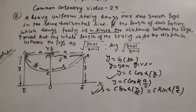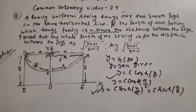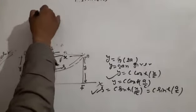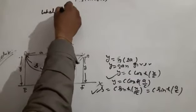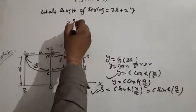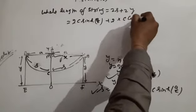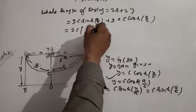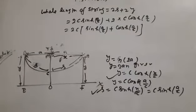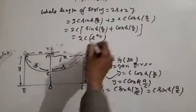The whole length of the string equals 2s + 2y. Substituting: 2s + 2y = 2c · sinh(a/c) + 2c · cosh(a/c). This simplifies to 2c · [sinh(a/c) + cosh(a/c)], which equals 2c · e^(a/c).